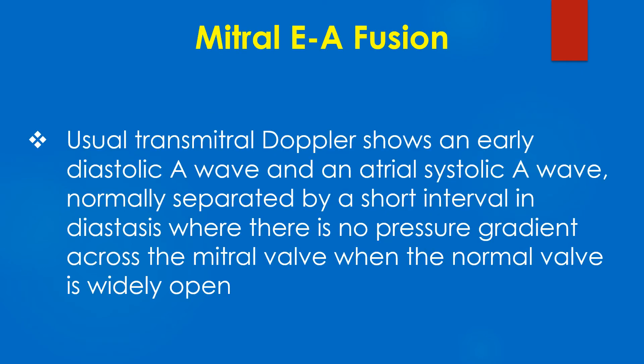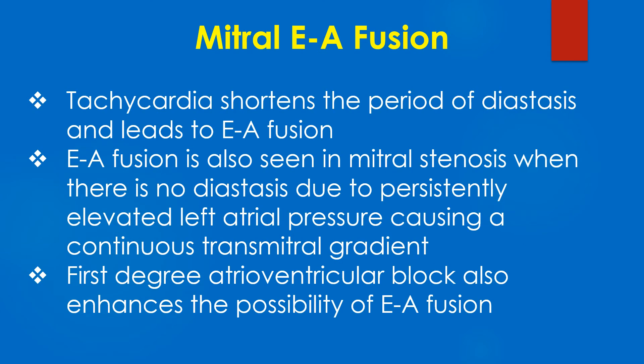The usual transmitral Doppler shows an early diastolic E wave and an atrial systolic A wave, normally separated by a short interval in diastasis where there is no pressure gradient across the mitral valve when the normal mitral valve is widely opened. Tachycardia shortens the period of diastasis and leads to E/A fusion.